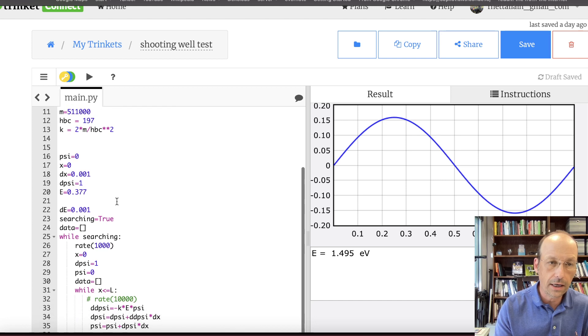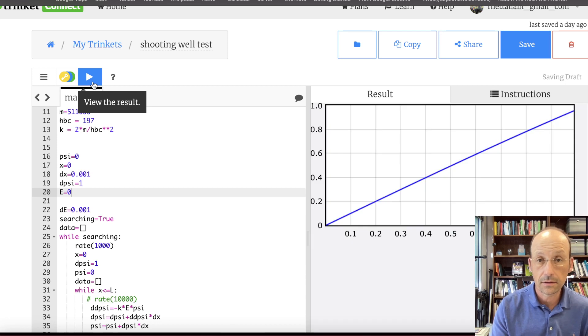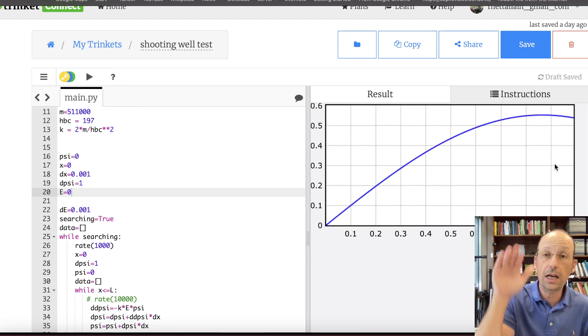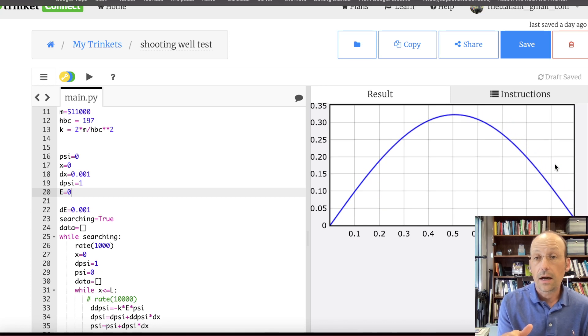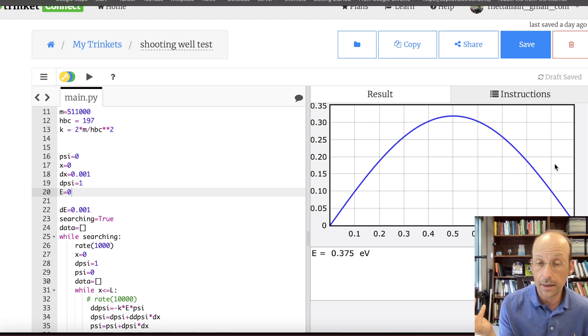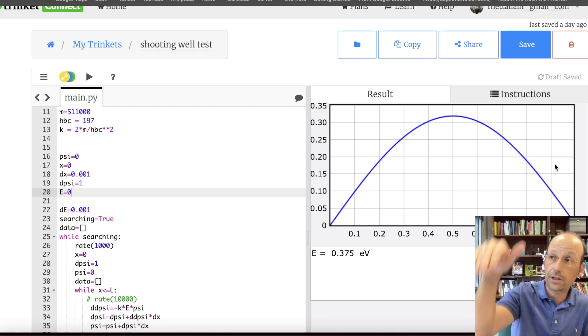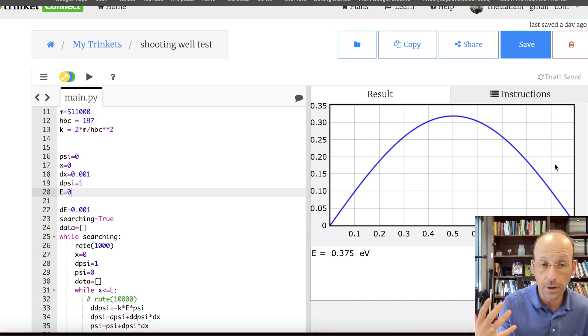So then if I go back over here, I can change this energy to zero. Start at energy zero. And then we'll get the first ground state. And so it just keeps on changing the energy level until I get back down to a final psi at x equals a of zero. And then that gives me my energy. And that's the shooting method. Because it keeps on shooting until it hits it. And then we call that the energy.